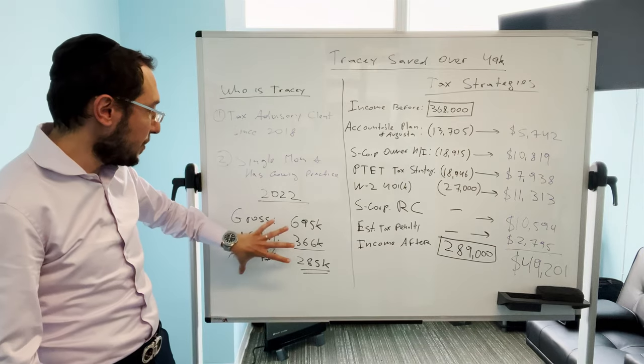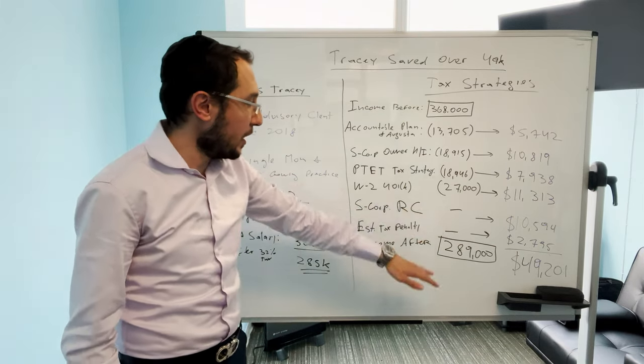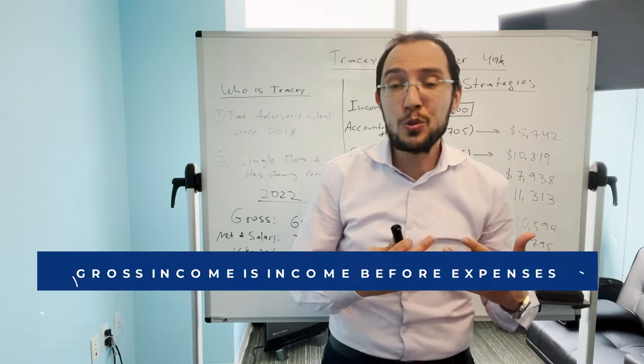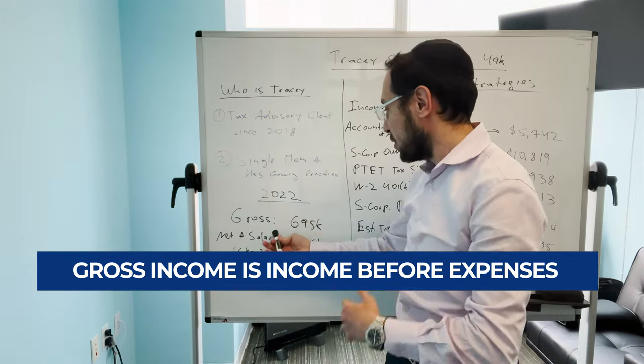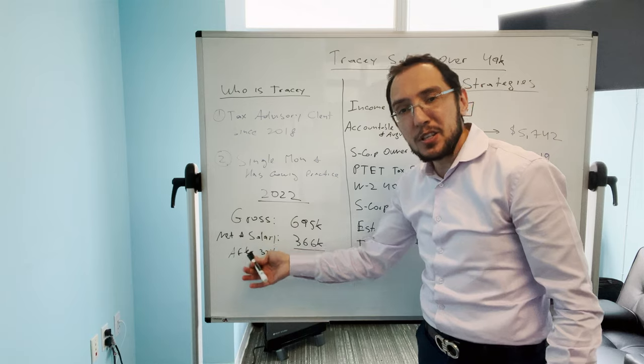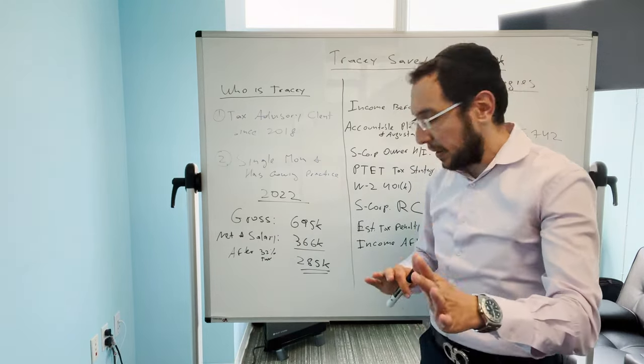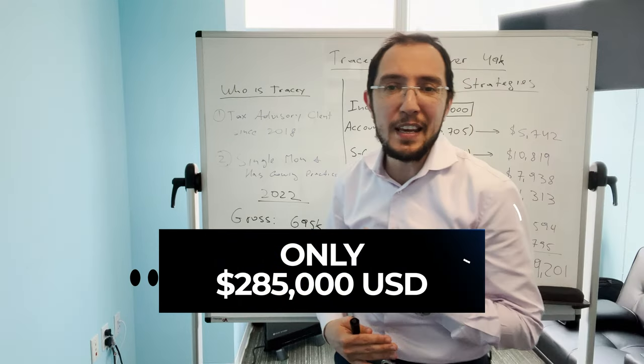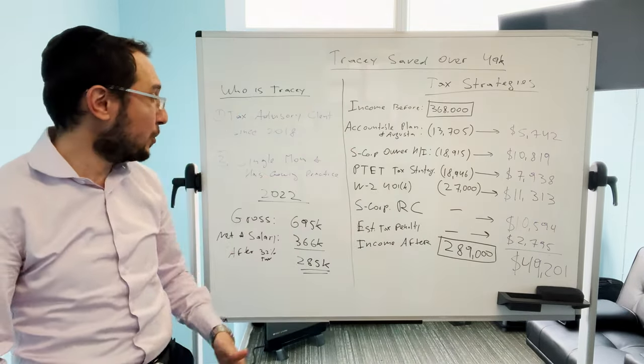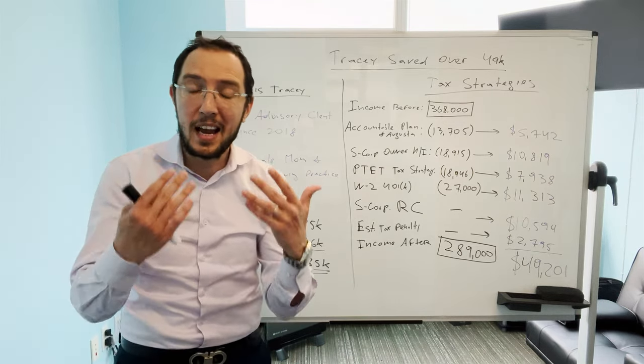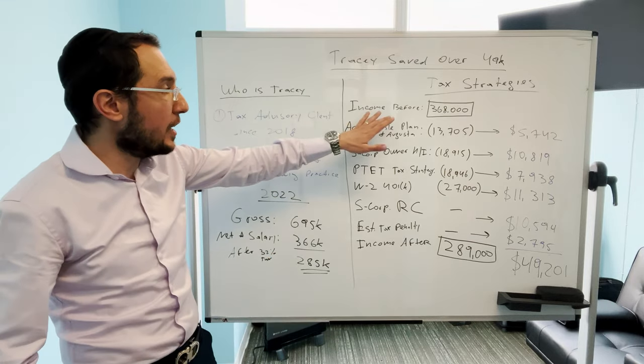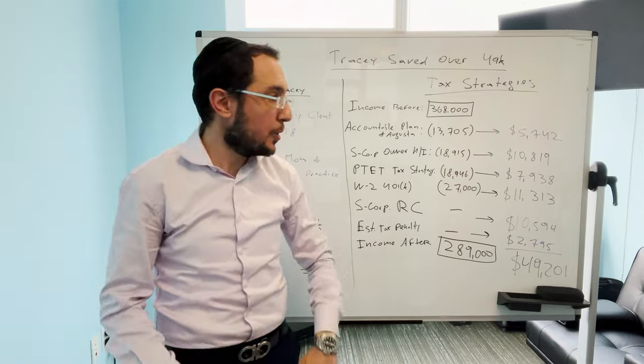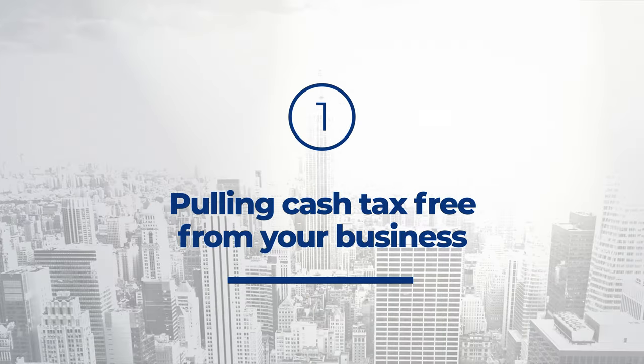The way I've broken this down for you is that I have her income for 2022 and that we also have income before and after all the tax strategies. In 2022, her gross income was about $700,000. You as a business owner know that gross income is all income before any expenses. Her net profit plus her owner's salary was $366,000. Think about that. She's in the 32% tax bracket between federal and state. She took home only $285,000 and that is less than half of what she made in the business in terms of gross revenue. More so why tax planning and advisory is really important for her. So, her income before any tax strategies was $368,000.